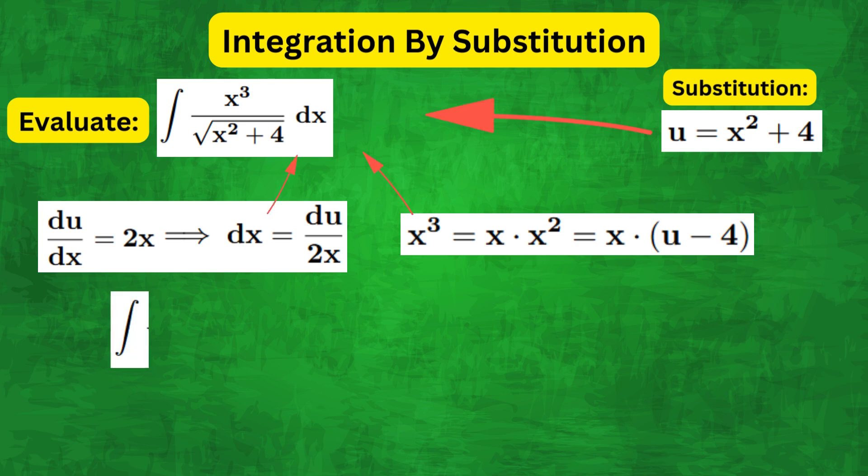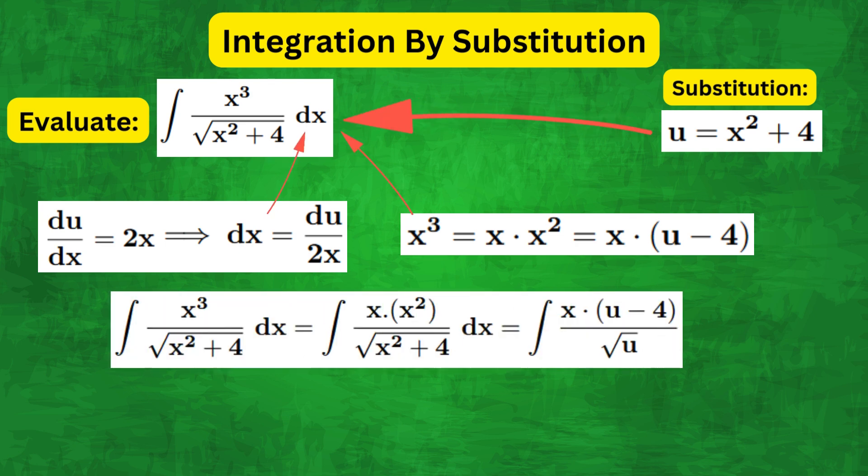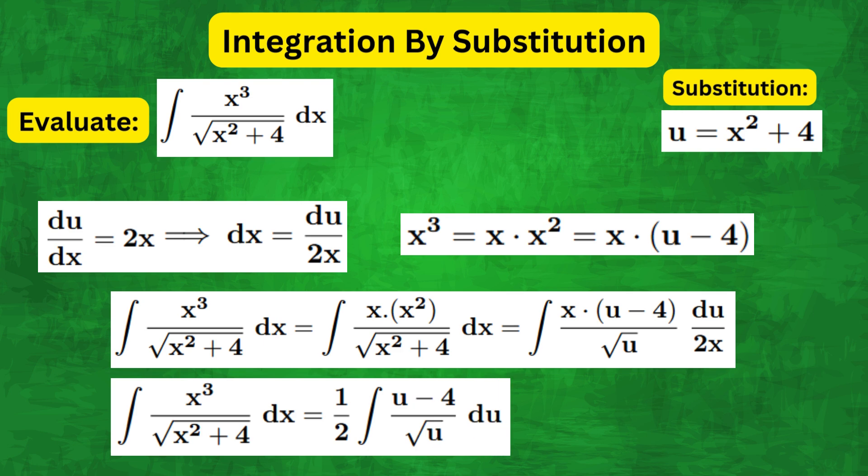So putting those into the integral we get x times open bracket u minus 4 over square root of u times du over 2x. Therefore, cancelling the x term from the numerator and denominator, we can write the integral as 1 over 2 integral of u minus 4 over square root of u times du.